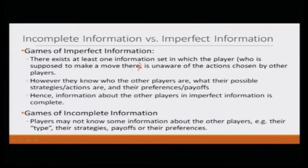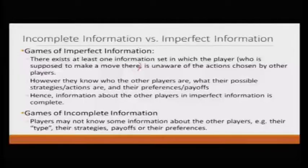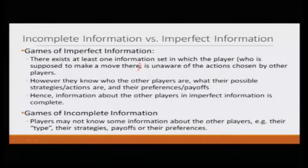As opposed to games of imperfect information, in games of incomplete information, players may not know some information about the other players — they may not know their type. You must be familiar with what we mean by type when you studied Bayesian games with Aditya. Players may not know the strategies of the other player or the payoffs. That is how incomplete information game is different from imperfect information game. Games of imperfect information may be of complete information, but games of incomplete information is always of imperfect information.